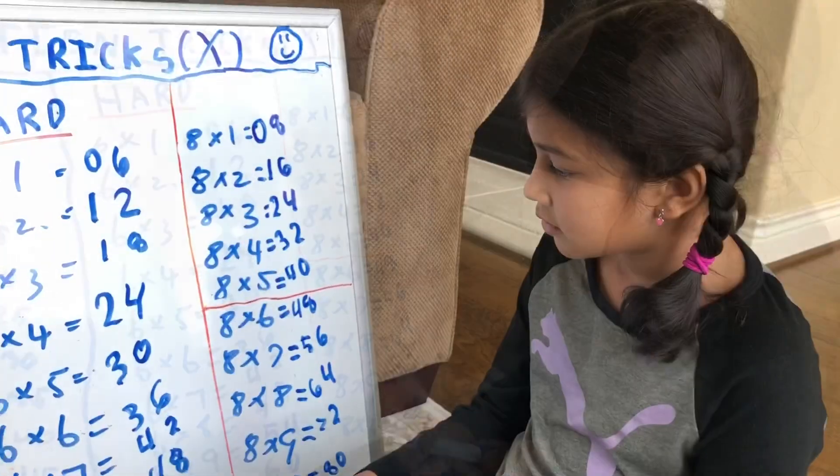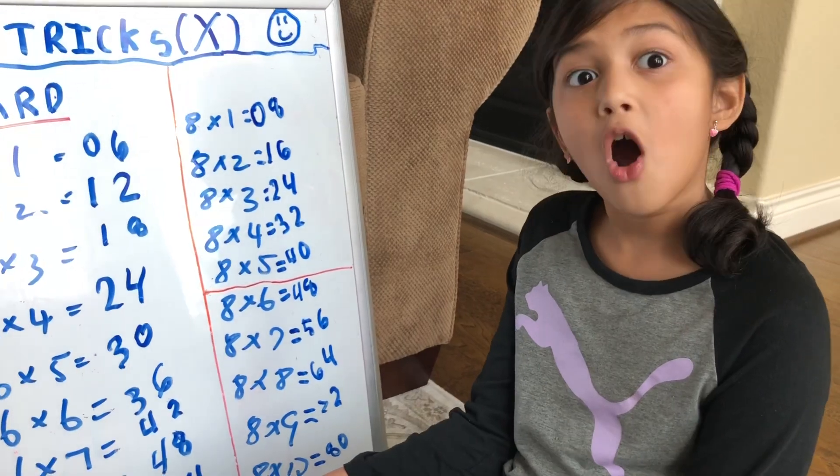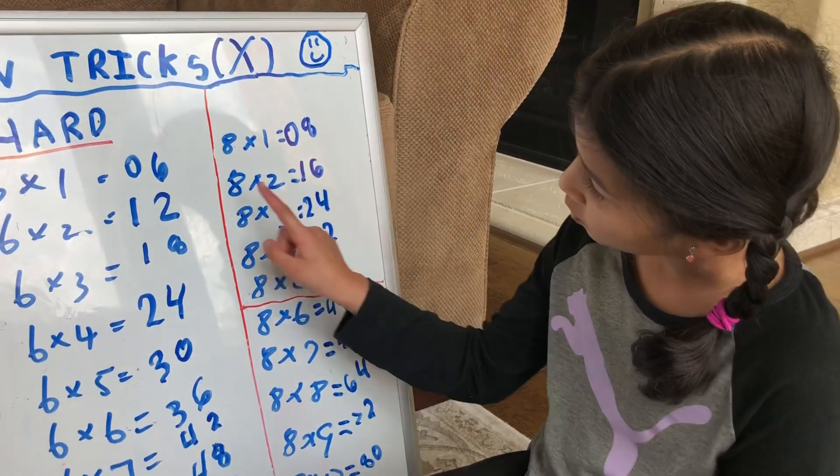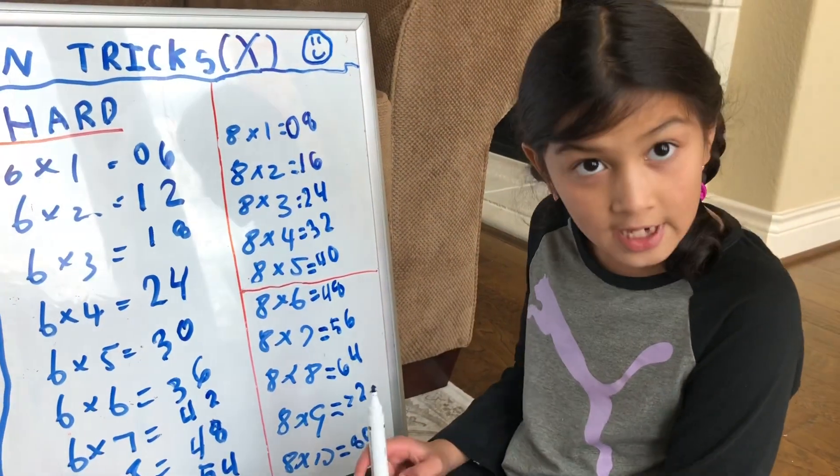Then you're done with the 6s. In 6s, you should always remember one thing: there will always be 1, 2, and 1, 5 in the tens.